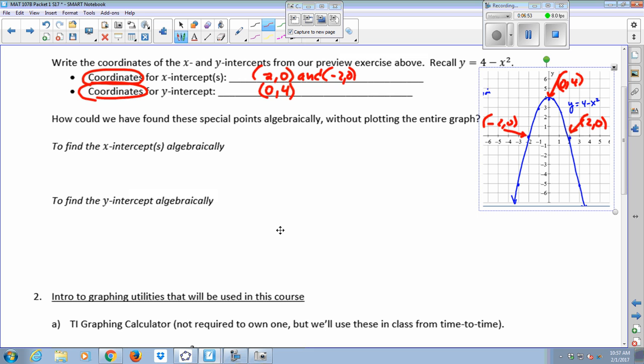But if you have the equation like we have here, you can always find the exact value of your intercepts by using algebra. To find the x-intercepts algebraically, you have an equation that has two variables in it. When I think of x-intercepts, I picture a point along the x-axis, and when I'm an x-intercept, my y-value is zero. So the first thing I do is I set y equal to zero.